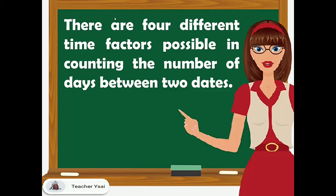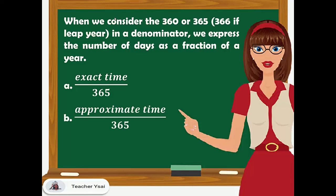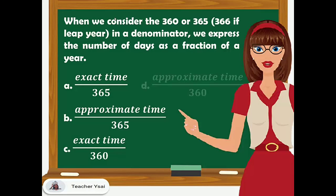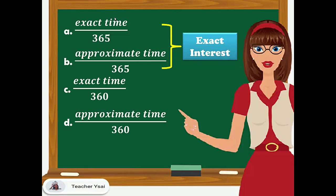There are four different time factors possible in counting the number of days between two dates. When we consider 360 or 365 — or 366 if it's a leap year — in the denominator, we express the number of days as a fraction of a year. The four combinations are: exact time over 365, approximate time over 365, exact time divided by 360, and approximate time divided by 360. Using either the first or the second yields exact interest, while the third or fourth yields ordinary interest.